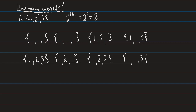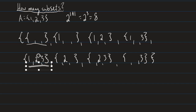We'd actually call this collection of all subsets the power set of A. The cardinality of the power set P is equal to 2 to the cardinality of A — it's simply the number of subsets of A.